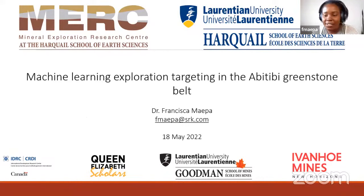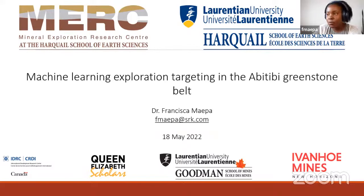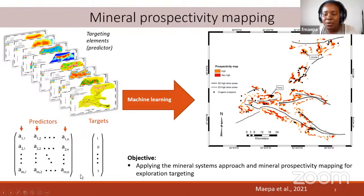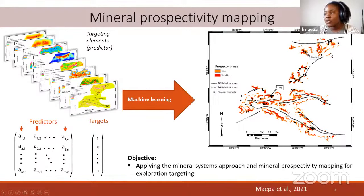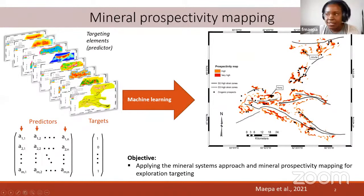Thanks to Ore Deposits Hub for the invite. I'm going to share work I did during my PhD at Laurentian University under the supervision of Professor Richard Smith, on mineral exploration targeting in the ABTV gold belt. Prospectivity mapping is a method that evaluates how prospective an area is for exploration by spatially integrating multiple geoscience datasets and using machine learning to recognise correlations between each geoscience layer and existing mines. The result is a prospectivity map with probability scores ranging from zero to one, with one being highly prospective.